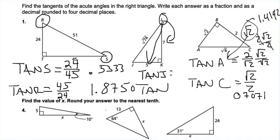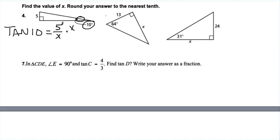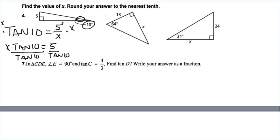For problems 4–6, find the value of X and round to the nearest tenth. For problem 4, we have angle 10 degrees. Using the tangent function: tangent of 10 equals 5 over X, since 5 is opposite and X is adjacent. We can't have X in the denominator, so multiply both sides by X: X times tangent(10) = 5. Then divide both sides by tangent(10) to get X = 5 divided by tangent(10). Plugging into the calculator gives 28.36, which rounds to 28.4.